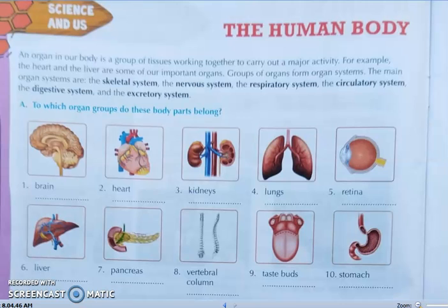Students, you have to draw all these pictures in your notebook and write down all the systems — like brain, nervous system; heart, circulatory system — and so on. Draw all the pictures, write the names in your notebook, and learn them. Thank you.